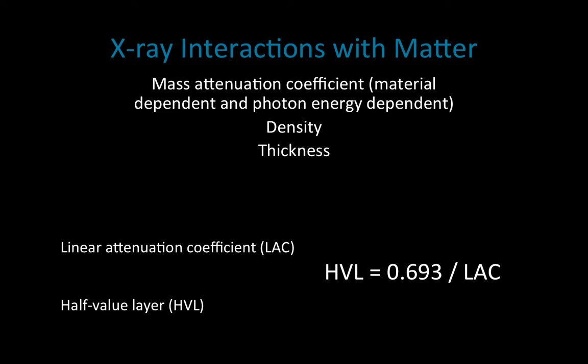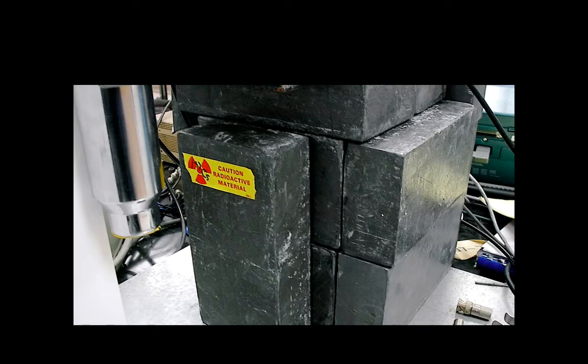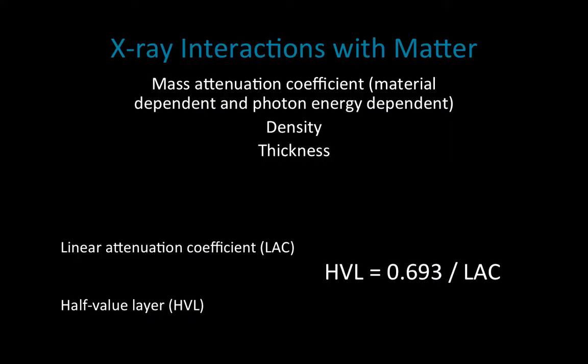I use the example of lead — we can see a nice example of lead shielding here. From a radiation safety perspective, we know that lead is a protective material. The reason we use it is that its half value layer is very small, so it allows us to gain protection from radiation by using just a very small amount of this material.